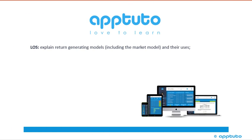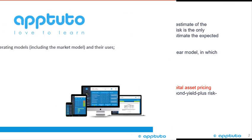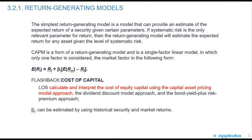This LOS explains return-generating models, including the market model, and their uses. Return-generating models: the simplest return-generating model is a model that can provide an estimate of the expected return of a security given certain parameters. If systematic risk is the only relevant parameter for return, then the return-generating model will estimate the expected return for any asset given the level of systematic risk.